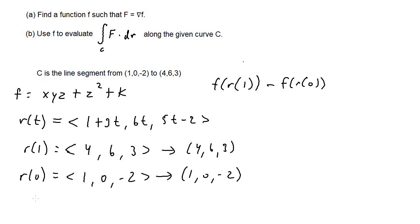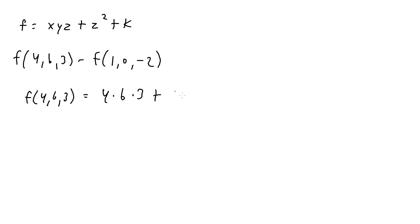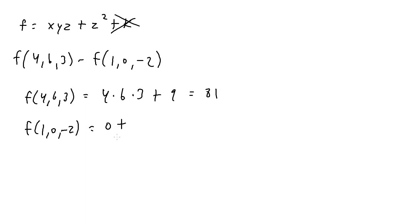For f(4, 6, 3): plugging in x equals 4, y equals 6, z equals 3, we get 4 times 6 times 3 plus 3 squared, which is 72 plus 9 equals 81. For f(1, 0, −2): plugging in x equals 1, y equals 0, z equals −2, we get 0 plus (−2) squared equals 4. So the final answer is 81 minus 4 equals 77.